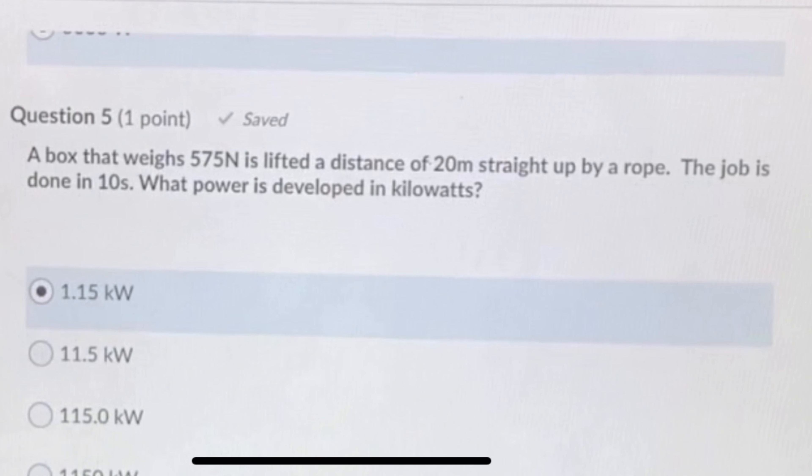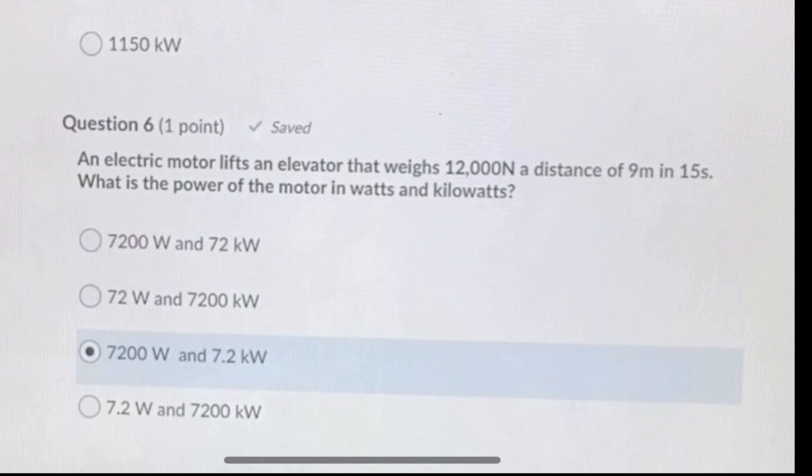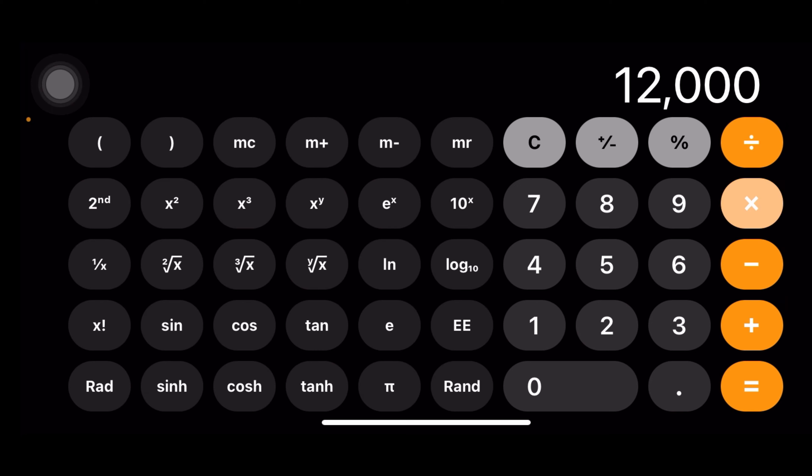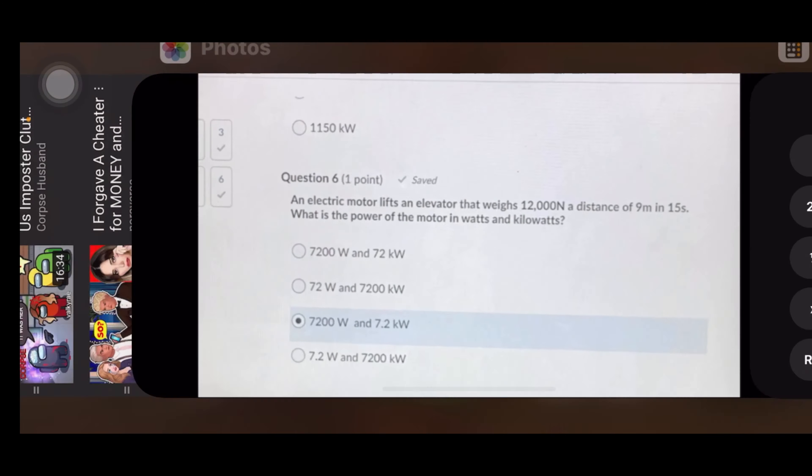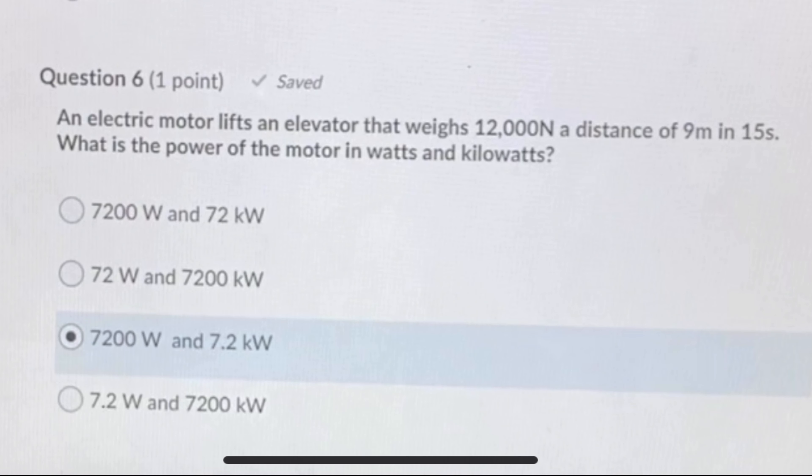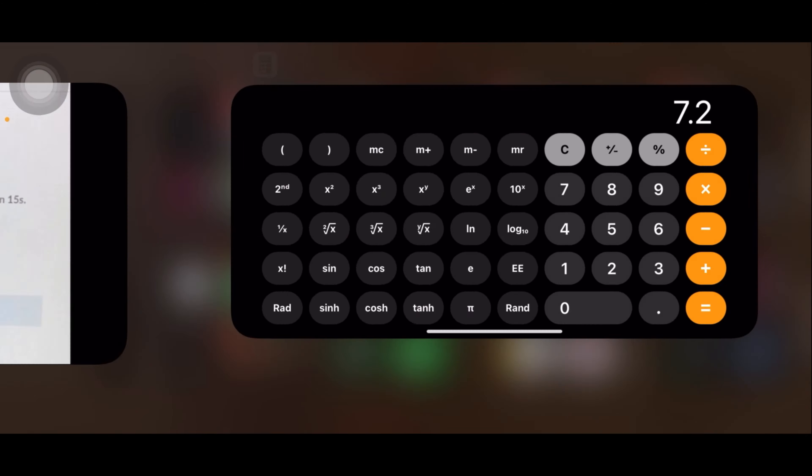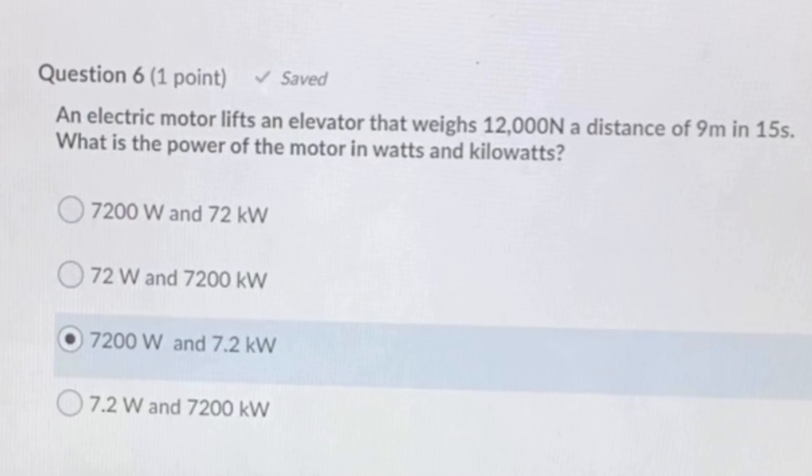An electric motor lifts an elevator that weighs 12,000 newtons a distance of 9 meters in 15 seconds. What is the power of the motor in watts and kilowatts? We have the force of weight, the distance, and the time. Force times distance over time. So force is 12,000, distance is 9 meters, divided by 15 seconds. So 7,200 watts. And to get kilowatts you divide by 1000, so 7.2 kilowatts.